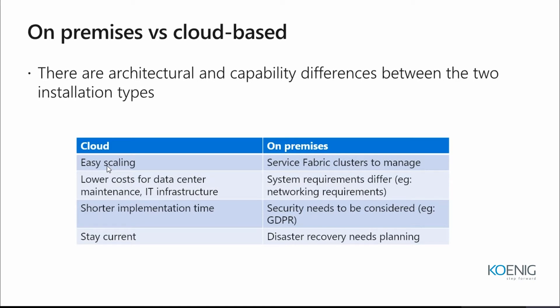When implementing Finance and Operations, you would implement it either on-premises or on cloud. With cloud, easy scaling is a key advantage - you don't have to invest in hardware, you just upgrade your subscription. With on-premises, all hardware requirements are managed by the organization, making scaling up or down more difficult. Cloud also offers lower data center and maintenance costs since Microsoft manages it for you.